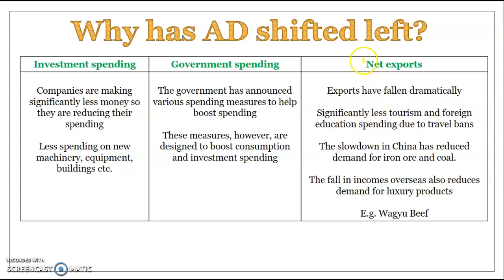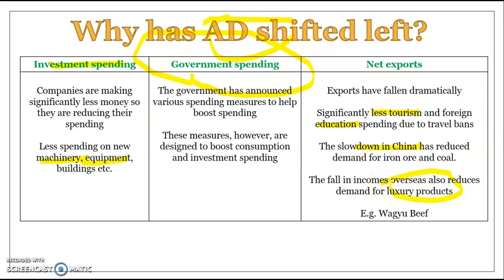Other reasons aggregate demand has fallen: investment spending also falls because companies aren't making money, so they're not spending on new machinery and equipment. Government spending has increased, but most of this money has been given to people to hopefully boost consumption and investment — it hasn't directly boosted aggregate demand yet. Net exports have fallen dramatically, mainly due to reduced tourism, bans on international education, China's slowdown reducing demand for coal and iron ore, and reduced overseas incomes cutting demand for luxury exports like Wagyu beef.